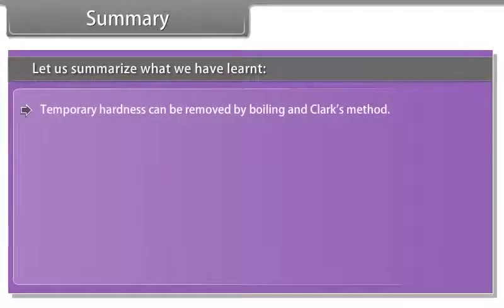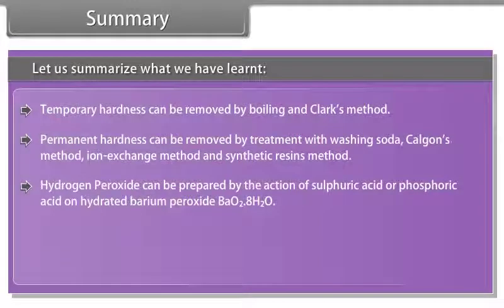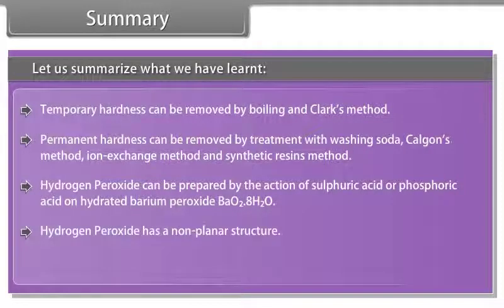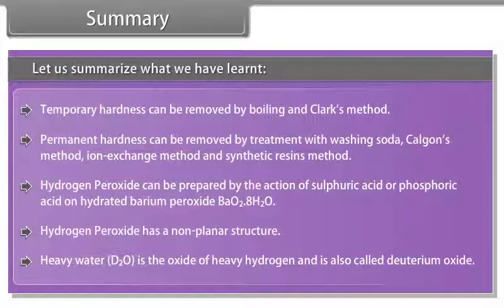Temporary hardness can be removed by boiling and Clark's method. Permanent hardness can be removed by treatment with washing soda, Calgan's method, ion exchange method, and synthetic resins method. Hydrogen peroxide can be prepared by the action of sulfuric acid or phosphoric acid on hydrated barium peroxide. Hydrogen peroxide has a non-planar structure. Heavy water is the oxide of heavy hydrogen and is also called deuterium oxide.